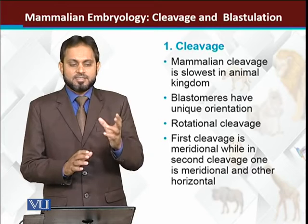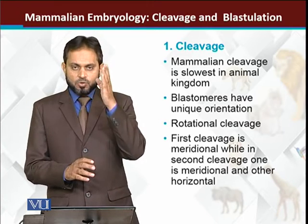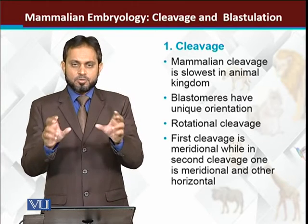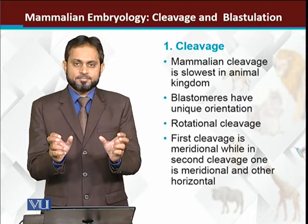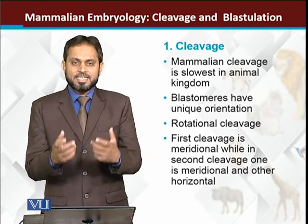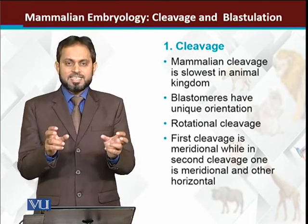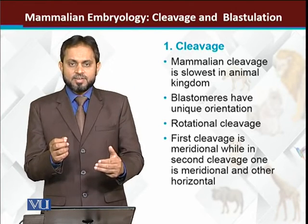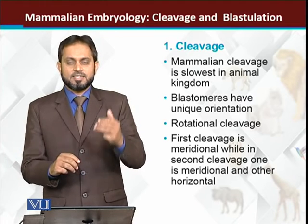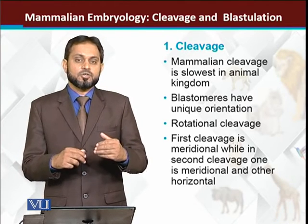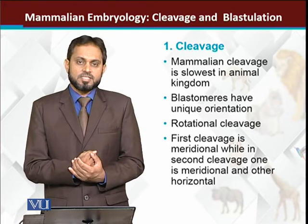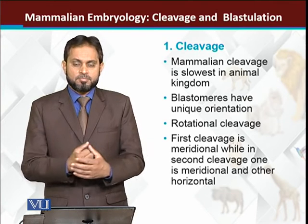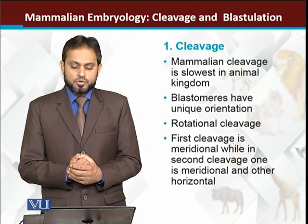How is it different? The first cleavage is longitudinal or meridional — from top to bottom — dividing one cell into two blastomeres. After that, in the second cleavage, both cells divide differently: one cell divides vertically and the other divides horizontally. Because both cells divide in different patterns, this is called rotational cleavage.